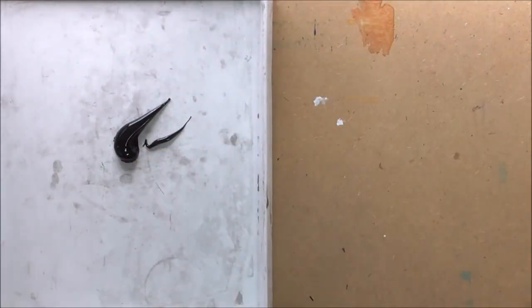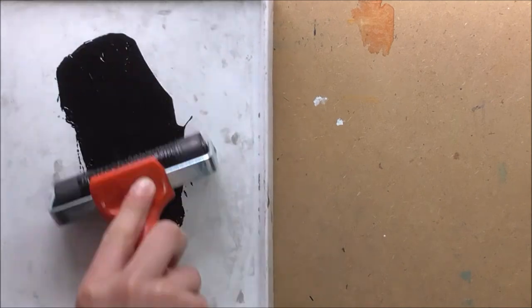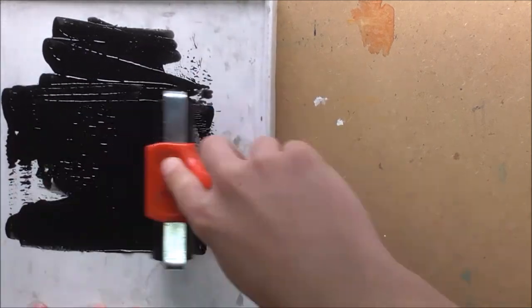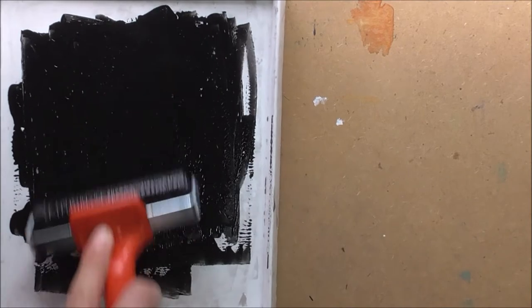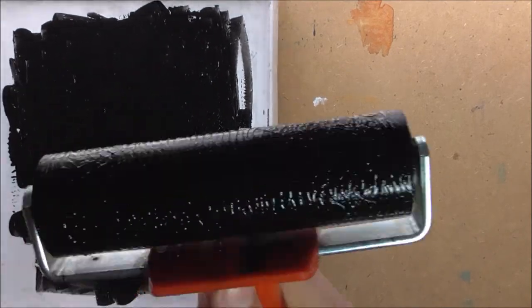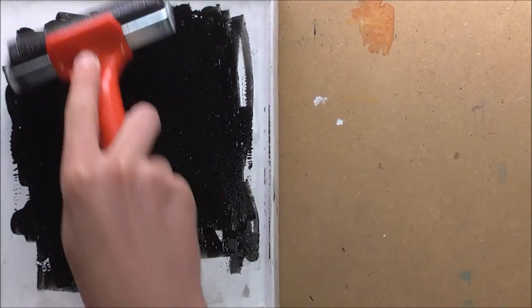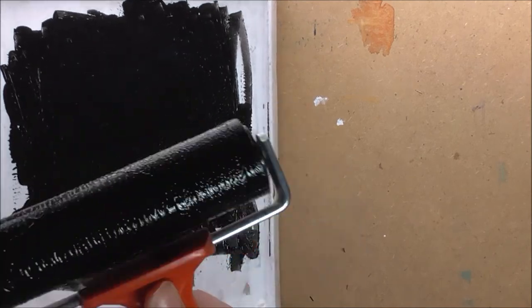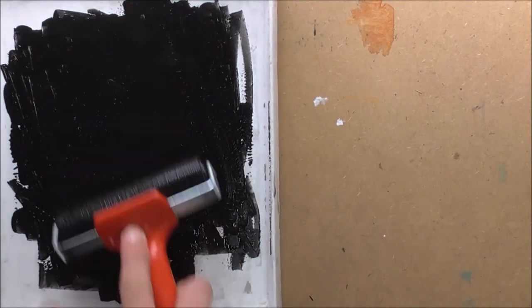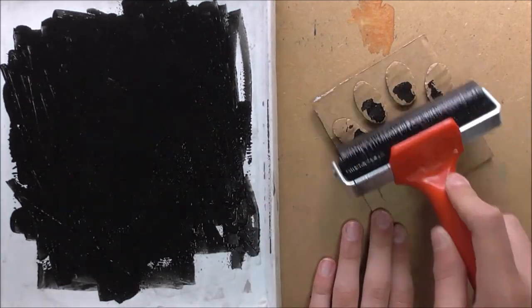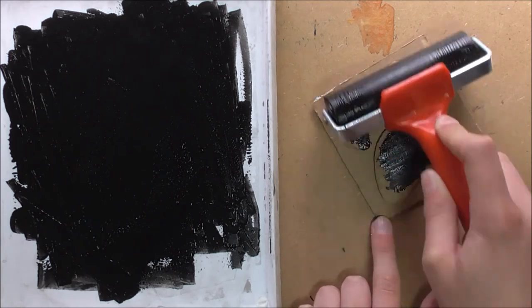Now you want to get an even coating on the actual roller, and you want to make the ink sound like velcro before you roll the ink onto your stamp.